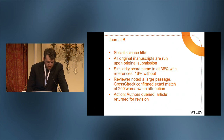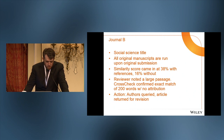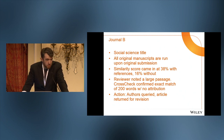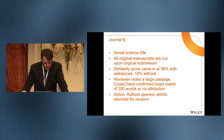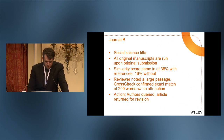Journal B, also a social science title — all original manuscripts run upon original submission. This one speaks to running reports with references versus without. The editor ran it through and it came back at 38% similarity with references and 16% without. 16% would have been below the normal threshold; 38% was fairly high above it. Because they caught it, they noticed a large passage of about 200 words with zero attribution. The editors went forward with the authors and the article was returned for revision.